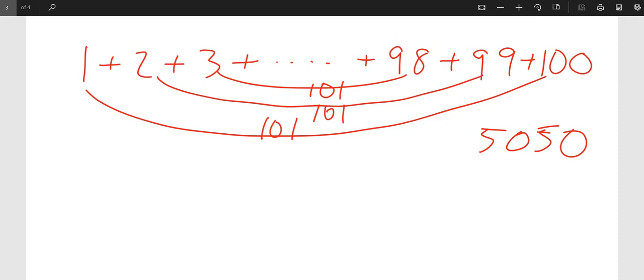Now, how many pairs were there? 50. So 50 pairs of 101. So that's 5,000 plus another 50. So the kid's pretty smart. Smarter than me at first grade.